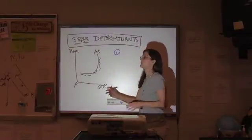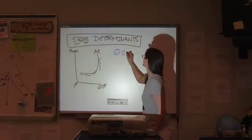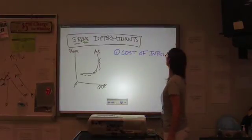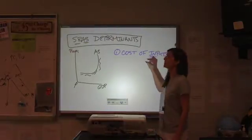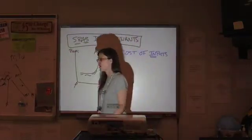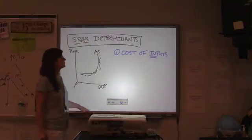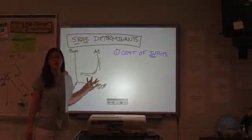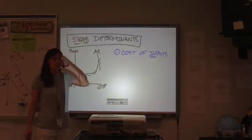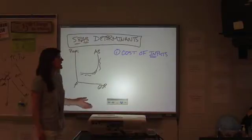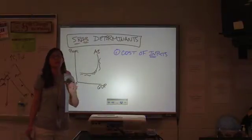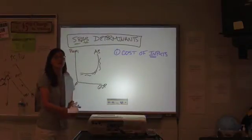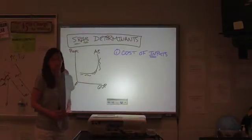One of them, and this is a big one, would be the cost of inputs. Your inputs are the things that you put into your production process. For example, energy costs would be one that you will probably see in multiple-choice questions. It's the most common one that I see in the literature that I run across. If you see the term negative supply shock, we're talking about an unexpected dramatic increase in the cost of an input that pushes aggregate supply to the left.